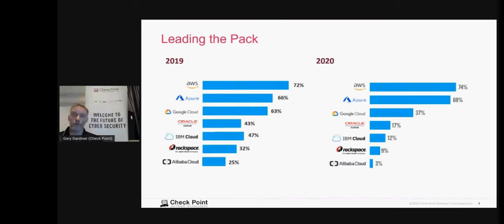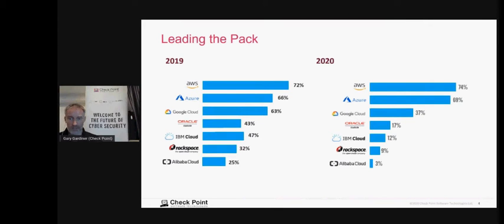Looking at which cloud vendors are used, as you'd expect AWS and Azure are the top two for infrastructure as a service. Amazon Web Services is leading the list, but notable growth includes Azure moving from 65% in 2019 to 69% in 2020, Google jumping from 37% to 48%, and Oracle also growing. We are seeing growth across all services.